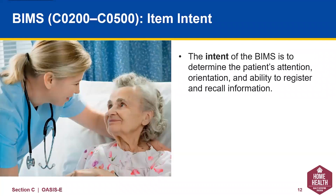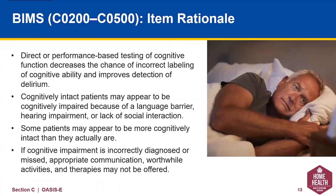Why are we doing the BIMS assessment? Direct or performance-based testing of cognitive function decreases the chance of incorrect labeling of cognitive ability and improves the detection of delirium. Cognitively intact patients may appear impaired due to language barriers, hearing impairment, or lack of social interaction. Some patients may appear more cognitively intact than they actually are. If cognitive impairment is incorrectly diagnosed or missed, appropriate communication, worthwhile activities, and therapies may not be offered.